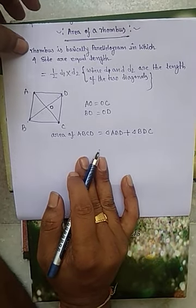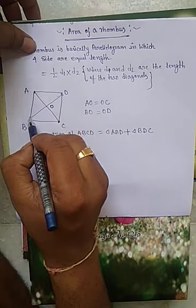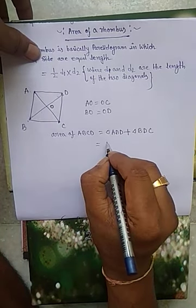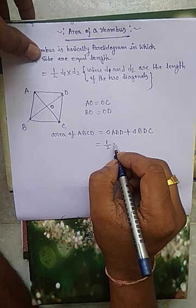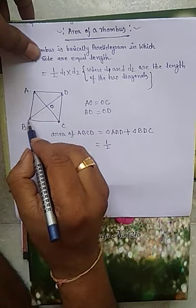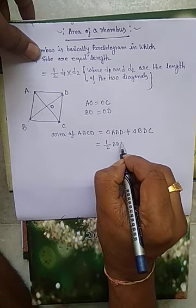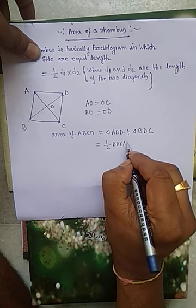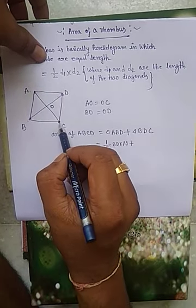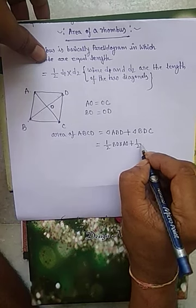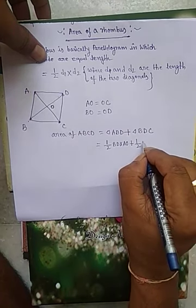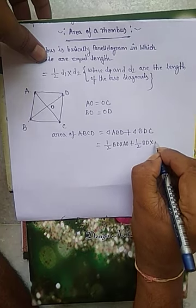Let's now, what is the area of triangle ABD? It is going to be half base into height, half BD into height AO. Now, what is the area of triangle BDC? It is half base BD and height OC.